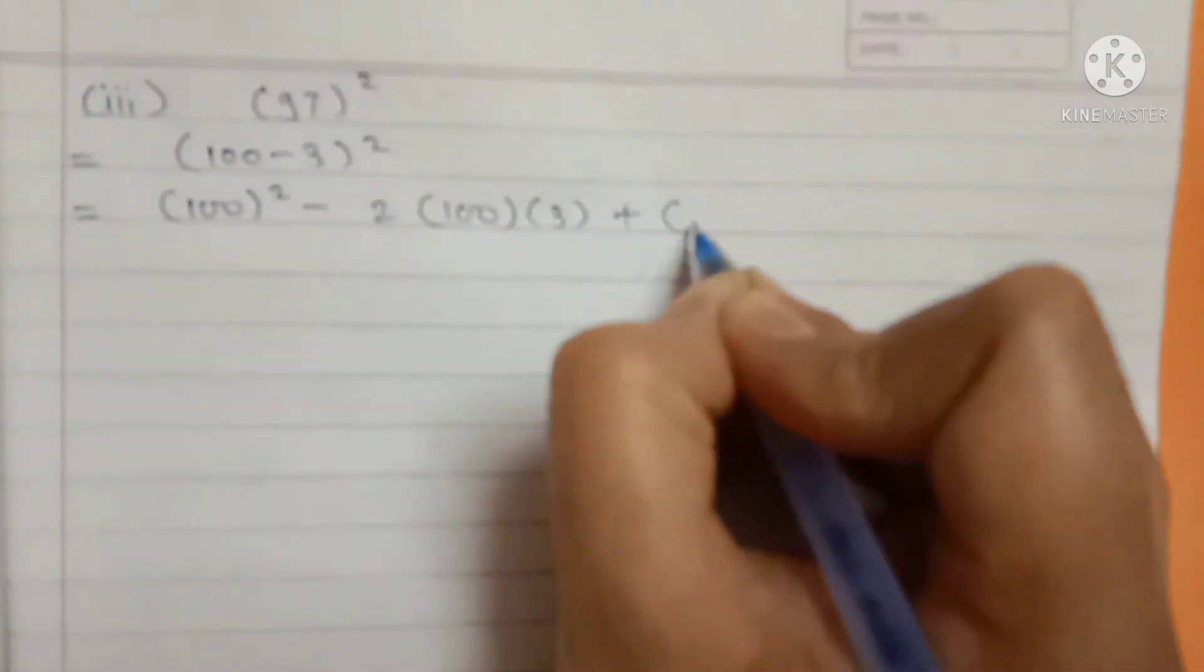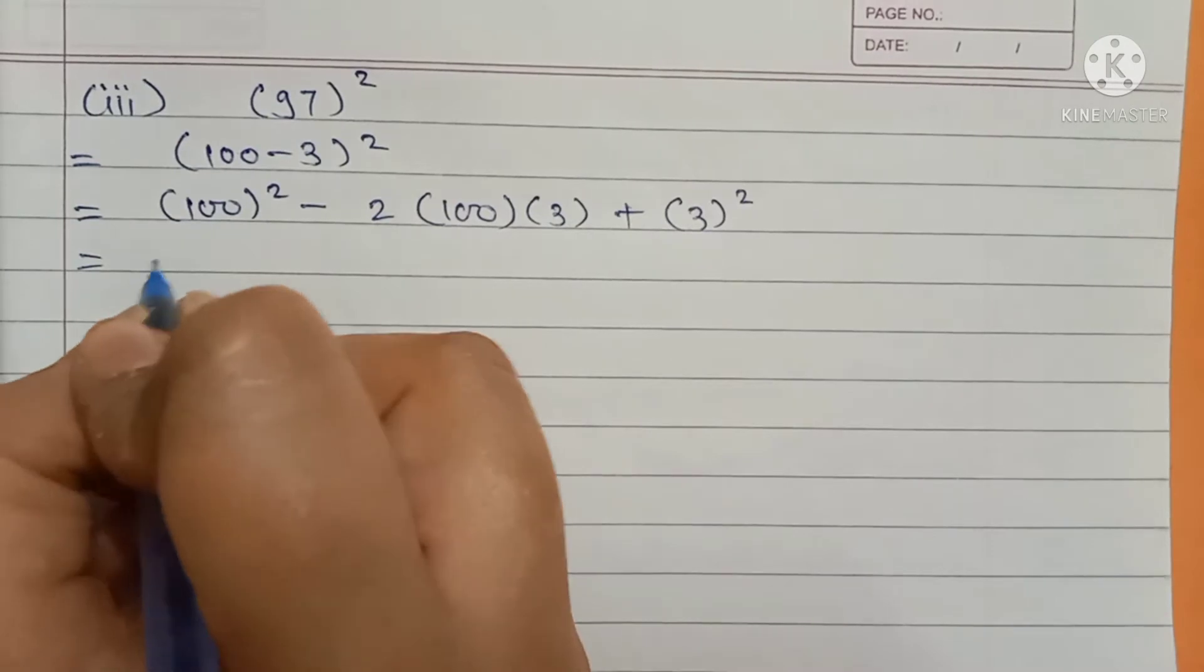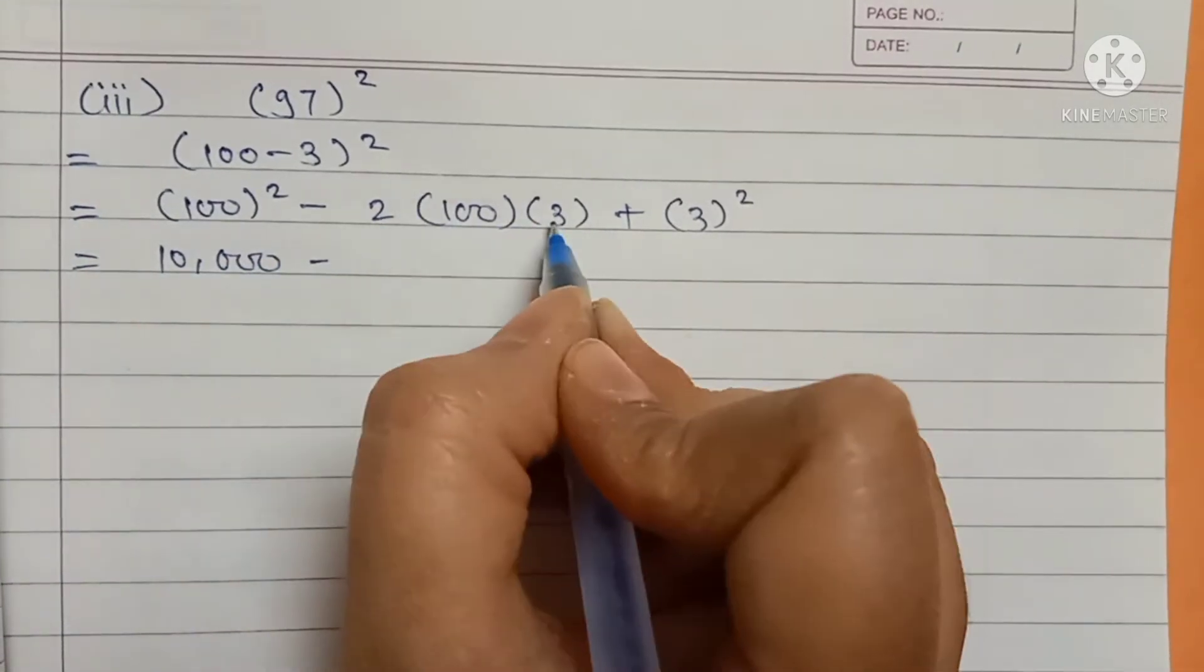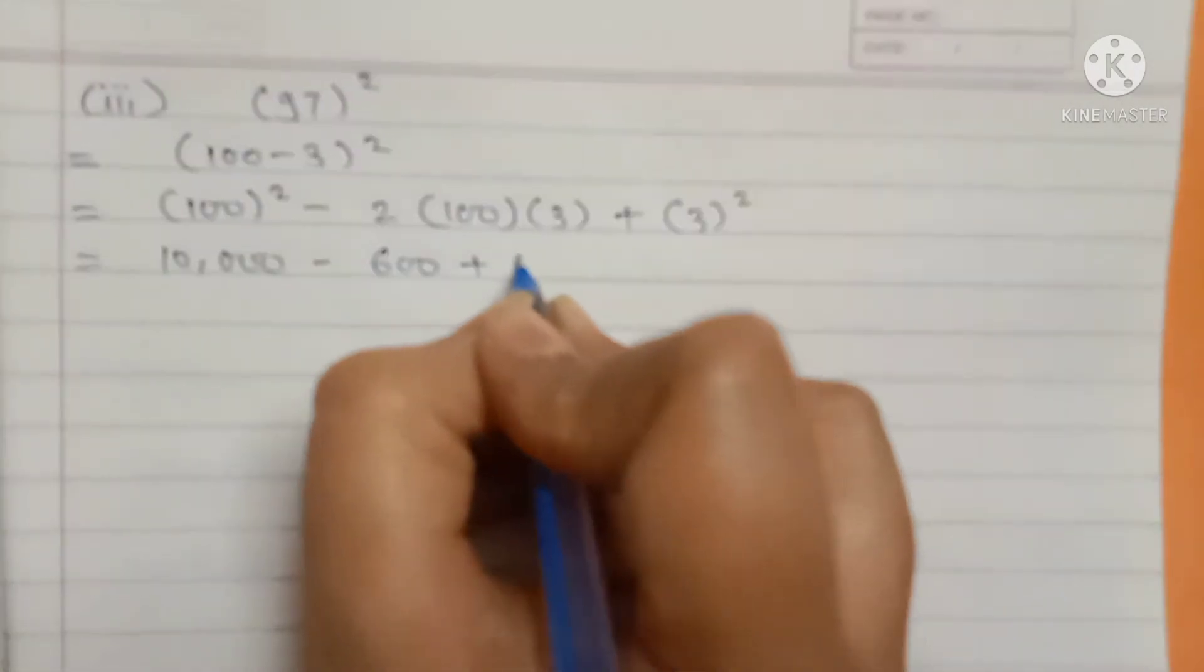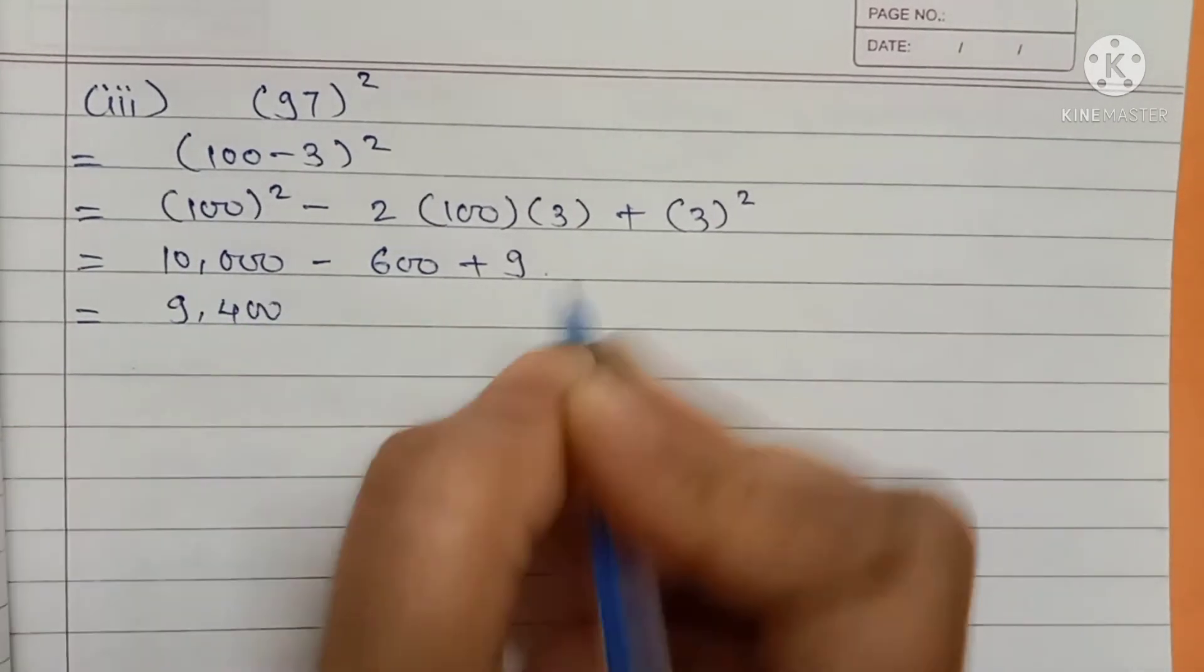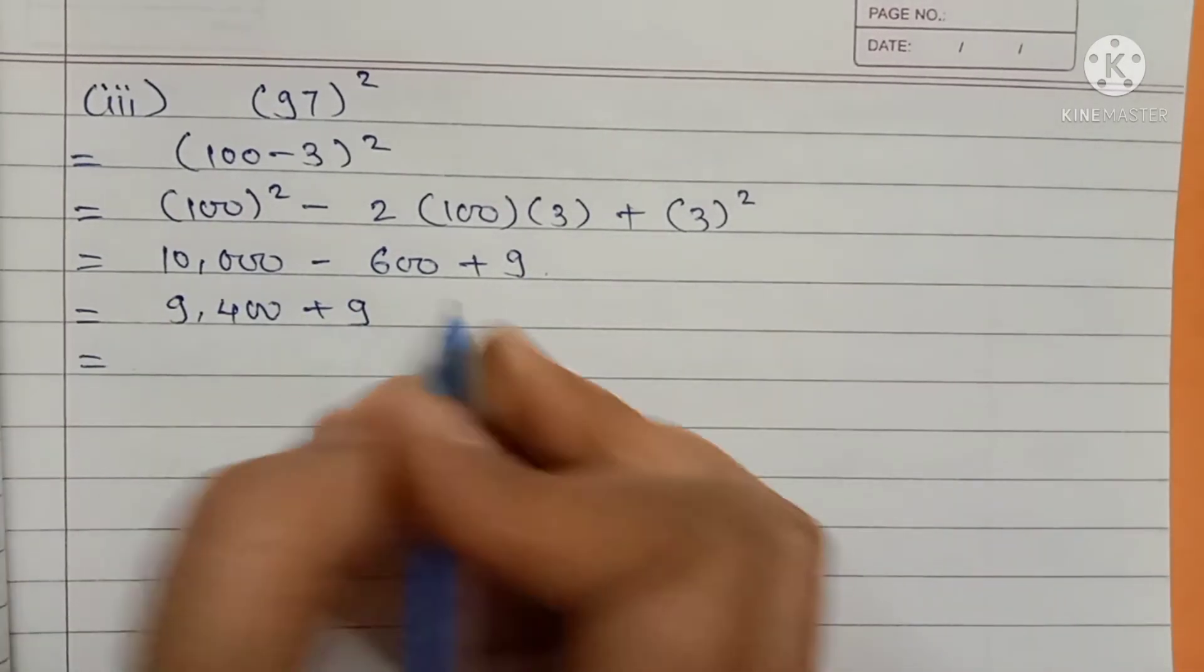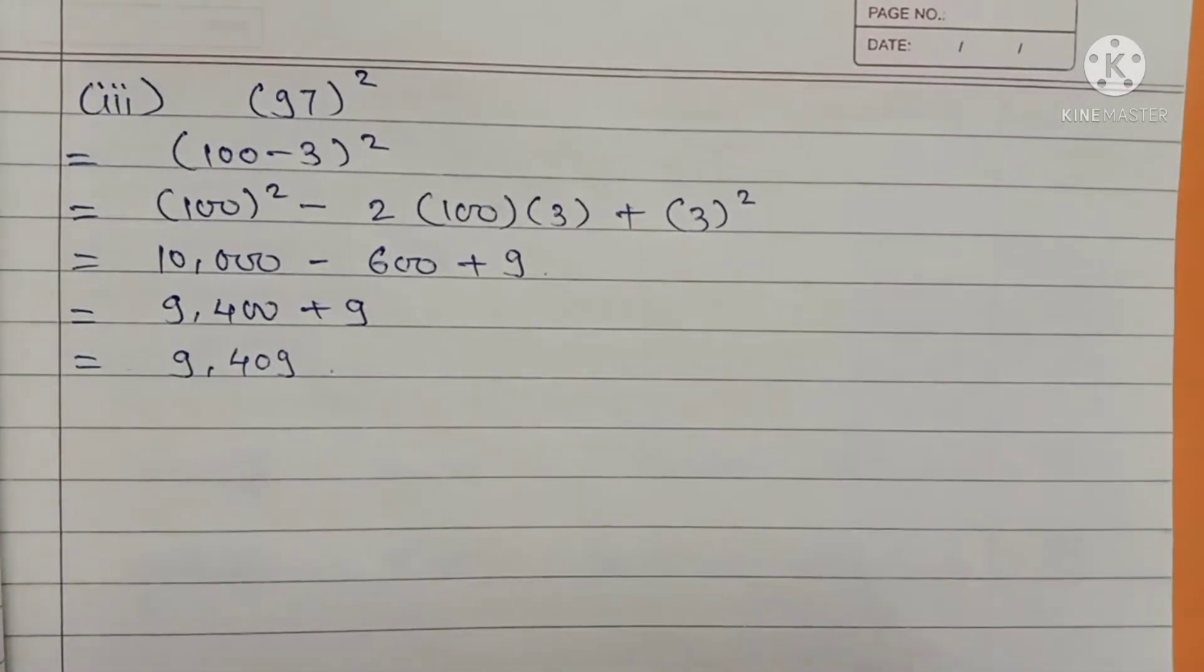B means 3, so 3 square. 100 square is 10,000 minus 6 into 100 is 600, plus 3 square is 9. 10,000 minus 600 is 9,400 plus 9. The answer is 9,409.